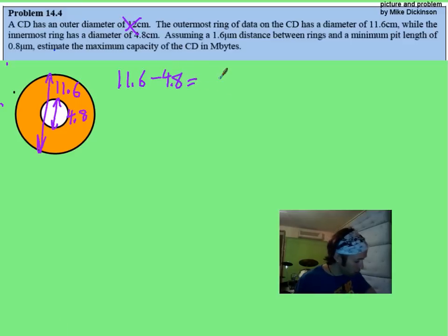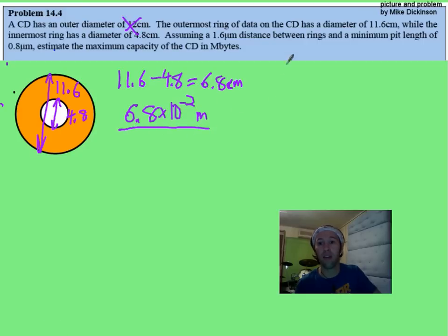You are going to end up with 6.8 centimeters of width. And you know that if you take that 6.8 times 10 to the negative second meters, divide that by the width of a particular ring, which we know is 1.6 times 10 to the negative 6 meters, we are going to find out that you have about 42,500 rings.